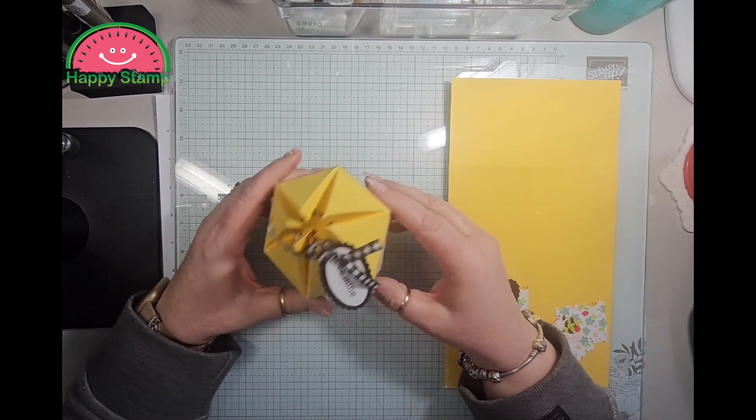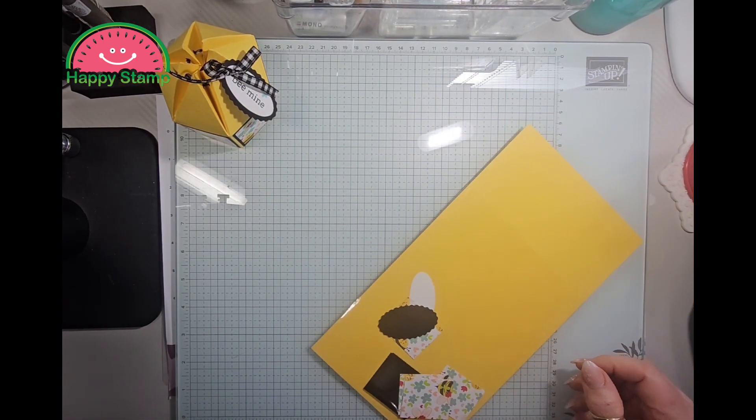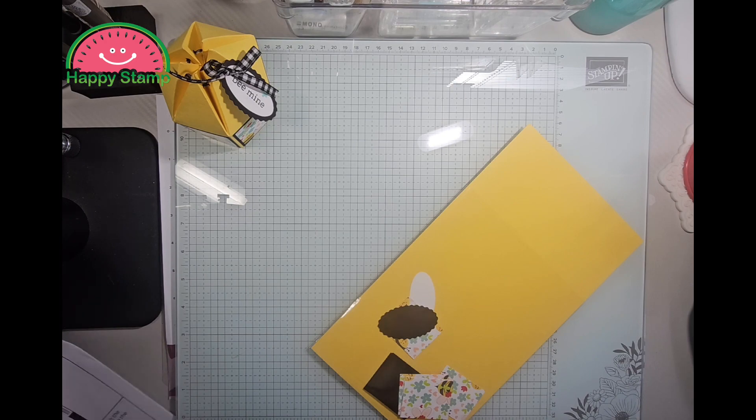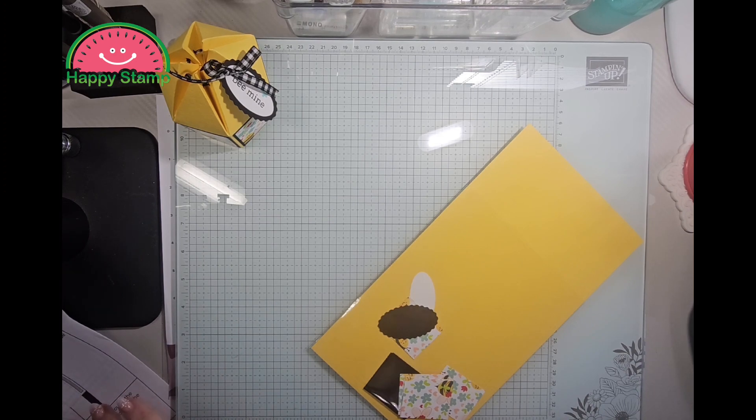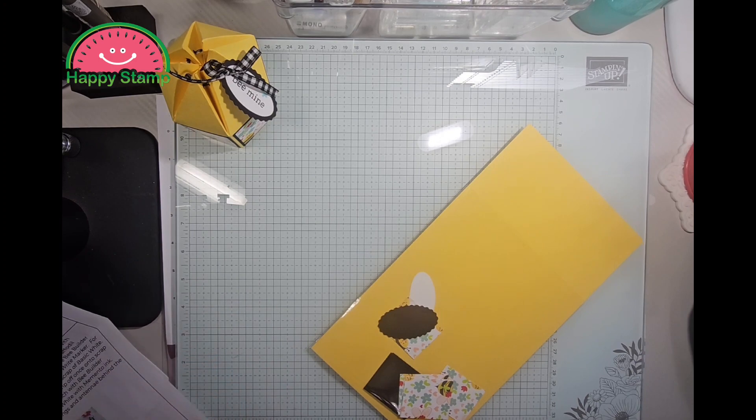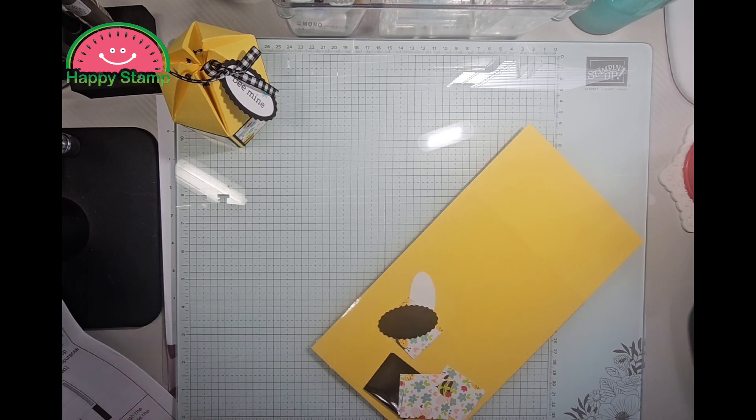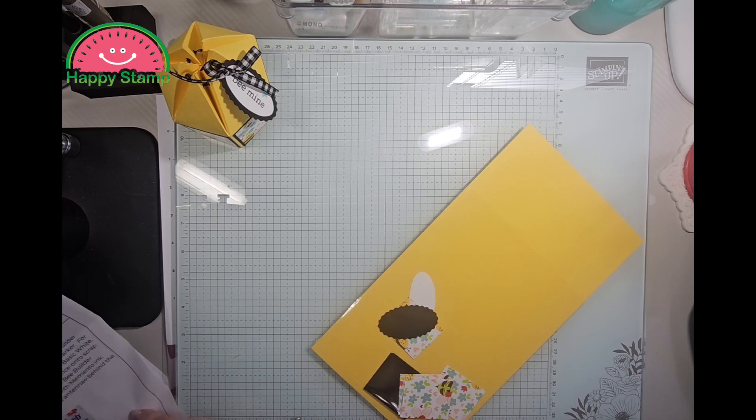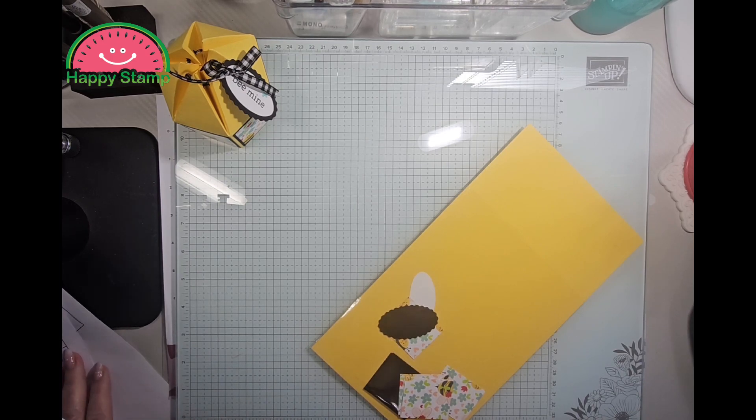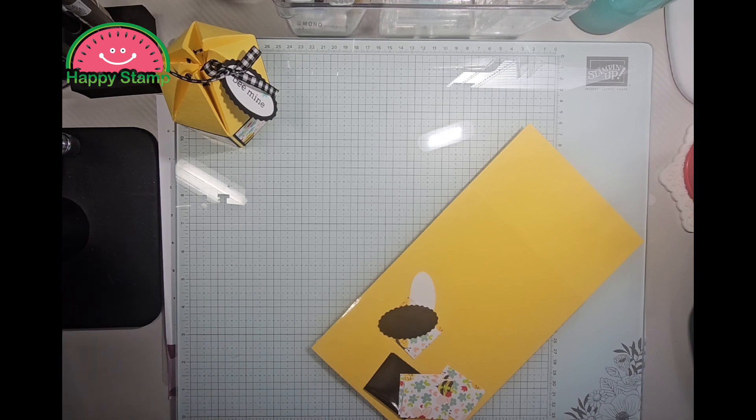All right, so you need a piece of daffodil delight and this measures six by eleven. We are going to get our scoring tool.